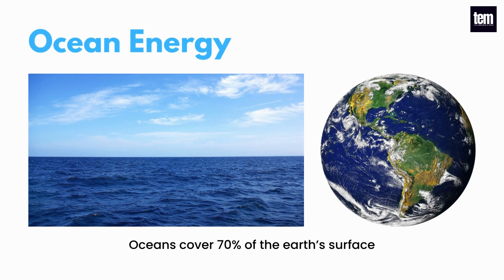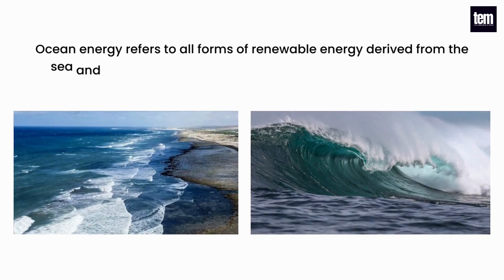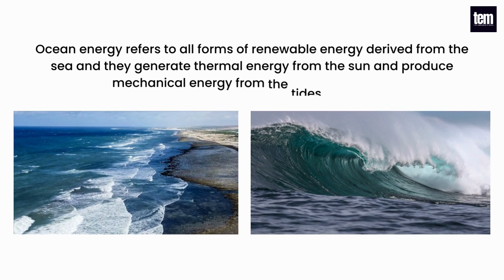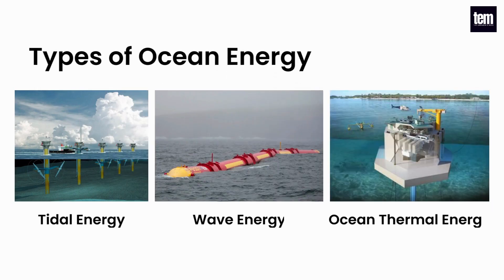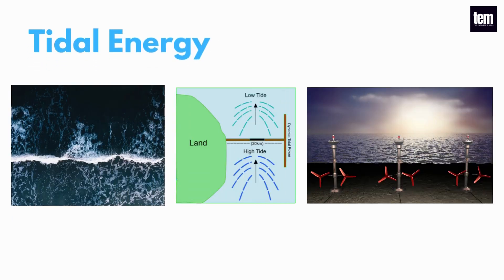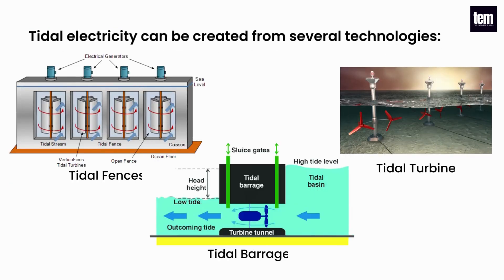Oceans cover 70% of the Earth's surface. Ocean energy refers to all forms of renewable energy derived from the sea, generating thermal energy from the sun and producing mechanical energy from the tides and waves. There are three main types of ocean energy technologies: tidal energy, wave energy, and ocean thermal energy. Tidal energy is a form of hydropower that converts the energy from the natural rise and fall of the tides into electricity, created from tidal barrages, tidal fences, and tidal turbines.